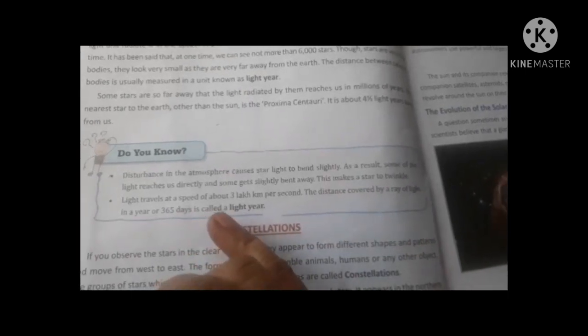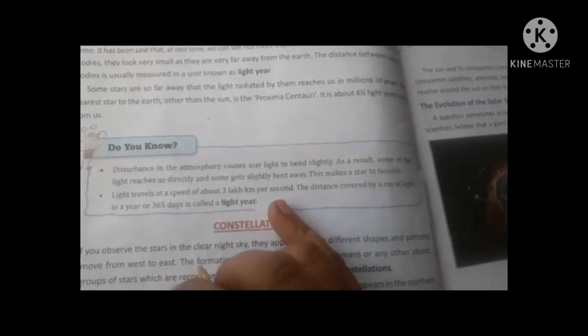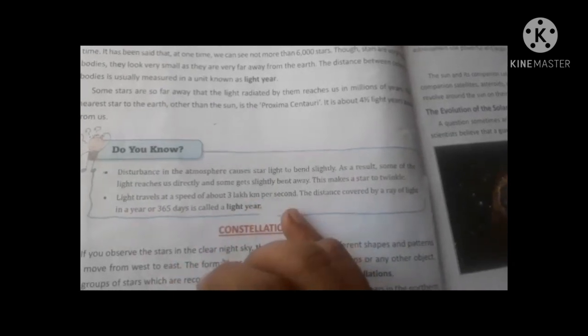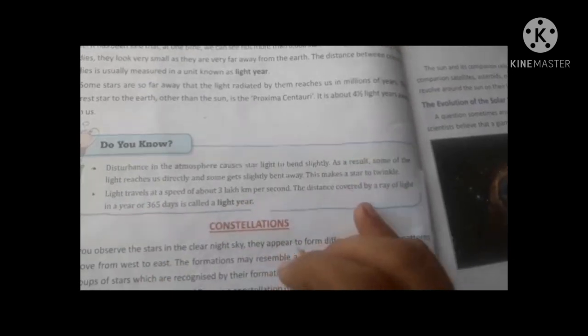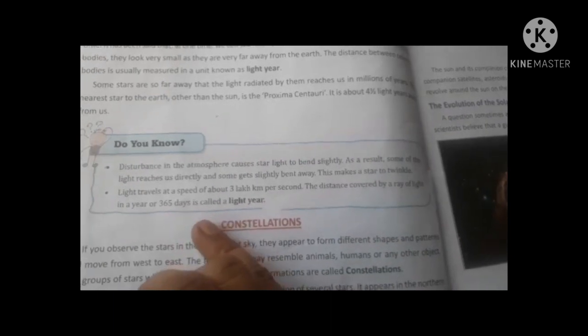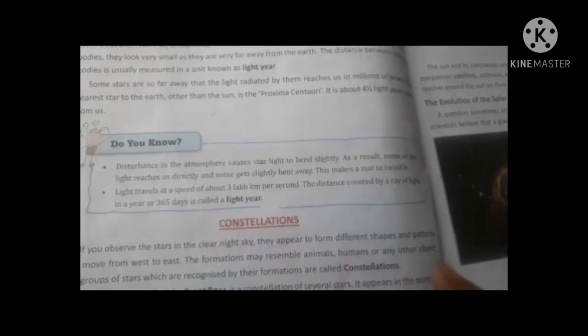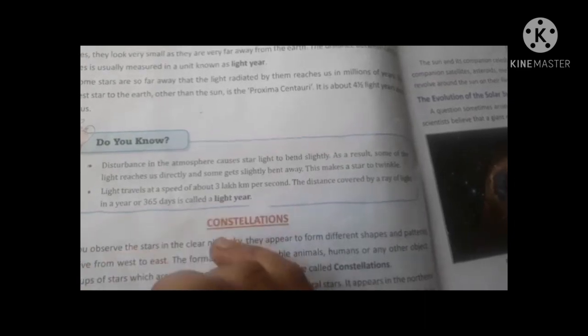Light travels at a speed of about 300,000 kilometers per second. In one second, light passes 300,000 kilometers. The distance covered by a ray of light in 365 days is called a light year. Those 365 days means the light travels for about one year.